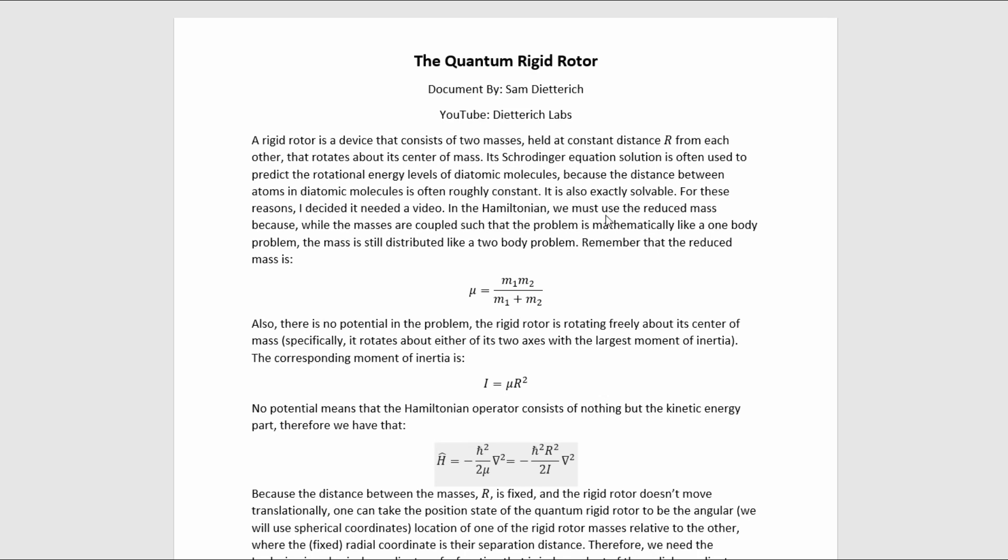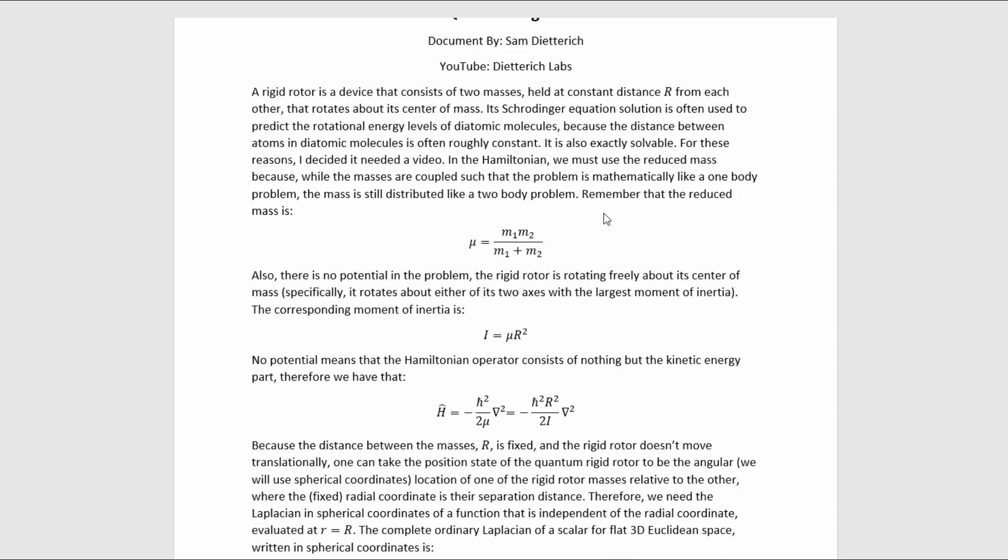In the Hamiltonian, we must use the reduced mass because while the masses are coupled such that the problem is mathematically like a one-body problem, the mass is still distributed like a two-body problem. Remember that the reduced mass is given by this formula. Also, there is no potential in the problem. The rigid rotor is rotating freely about its center of mass. Specifically, it rotates about either of its two axes with the largest moment of inertia.